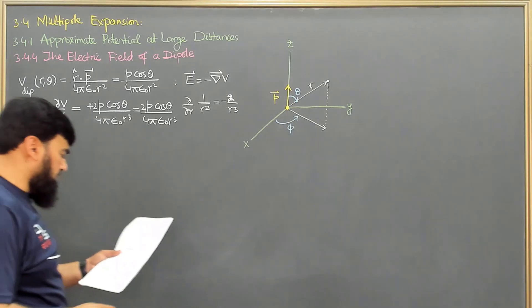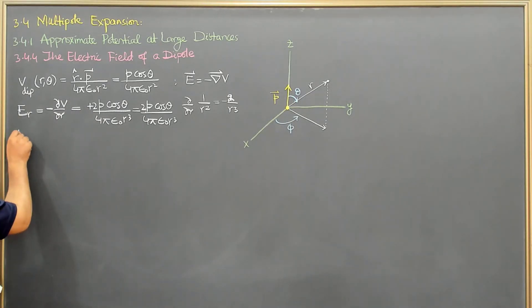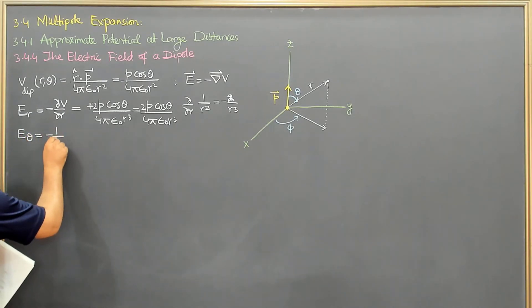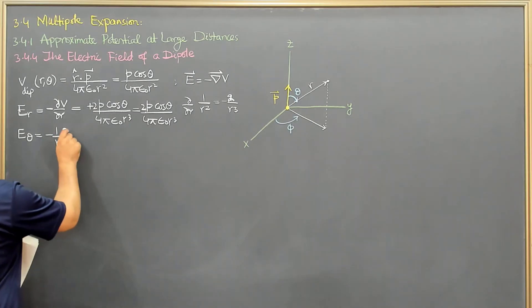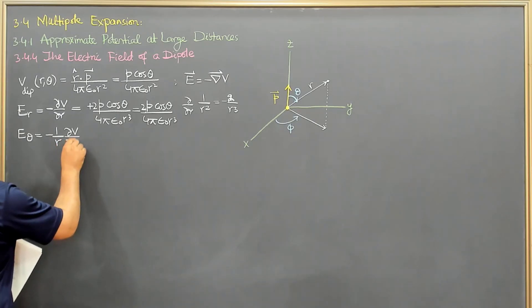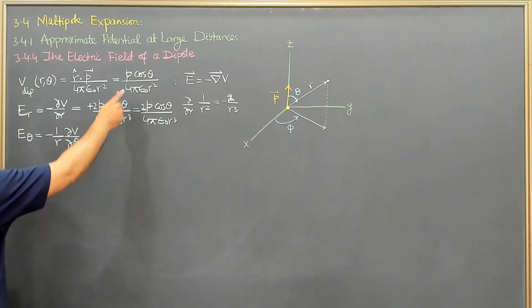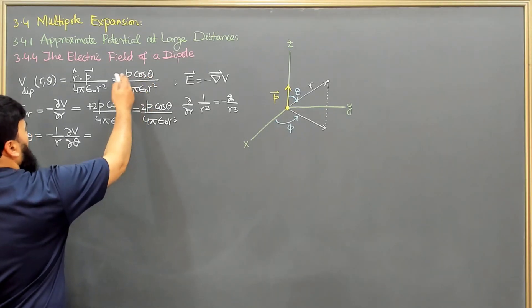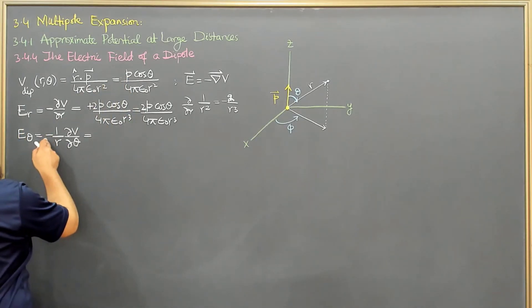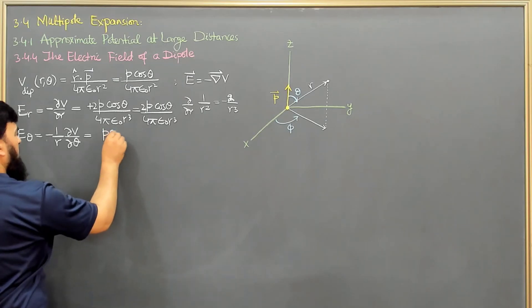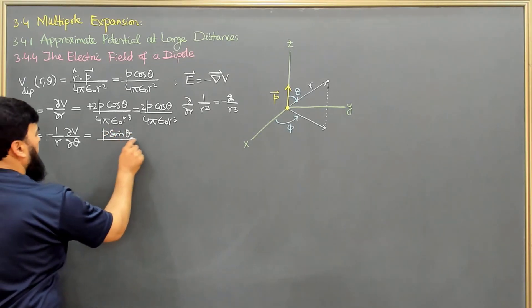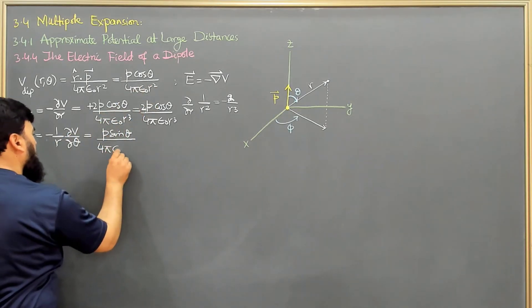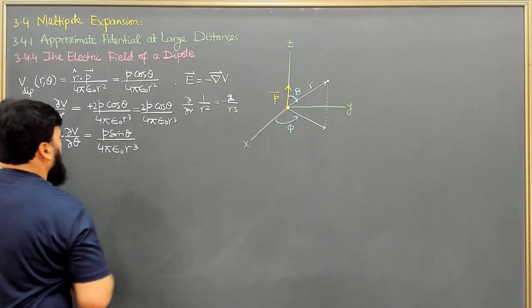Similarly, the theta component of the gradient is E_theta = minus (1/R) times the partial derivative of V with respect to theta. Differentiating cos(theta) gives minus sine(theta), and the two minus signs combine to give plus. So E_theta = P sin(theta) divided by 4 pi epsilon-naught R cubed.